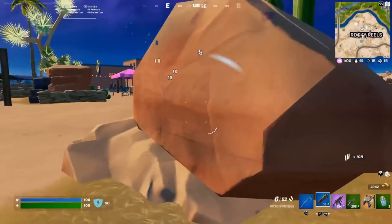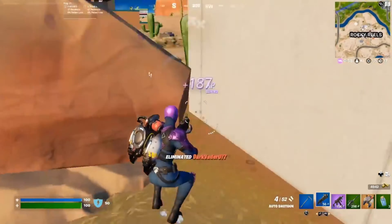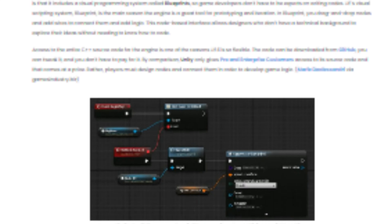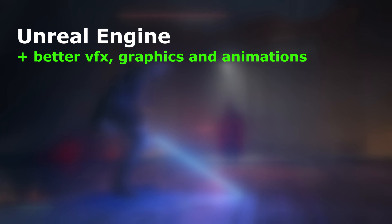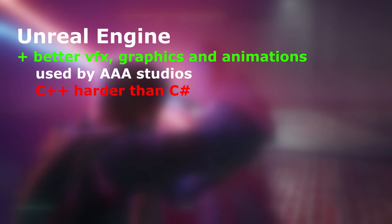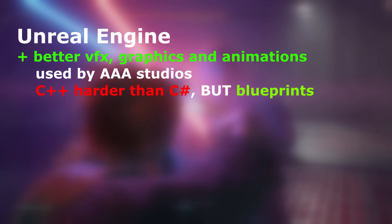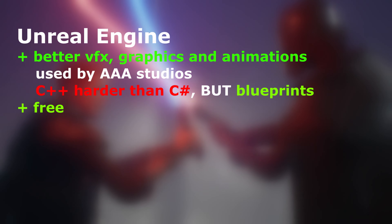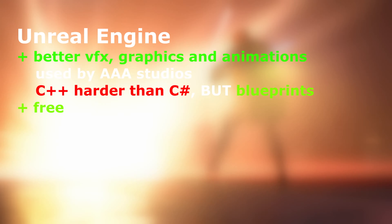That being said, let's talk about what some websites and blogs say about these two engines. While comparing them, most articles conclude these few points: Unreal Engine has better visual effects, graphics and animations. It is mostly used by AAA studios. Although C++ is a harder language than Unity's C#, you can avoid it simply by using Blueprints. Similar to Unity, this engine is completely free.